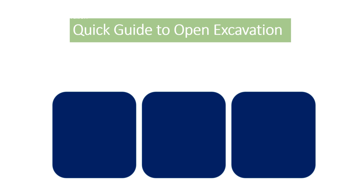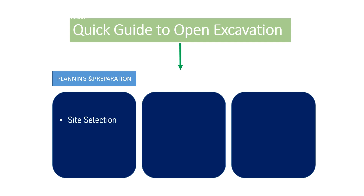Here is a basic guide to conduct open excavation. Step 1 is planning and preparation. This starts with proper site selection — choosing locations that represent the site's conditions and avoiding areas with potential hazards. Next, we assemble the necessary tools and equipment, including shovels, picks, buckets, and safety gear. We obtain the required permits so we don't face interruptions from local authorities. Finally, we implement safety precautions to protect workers from cave-ins, equipment hazards, and other risks.